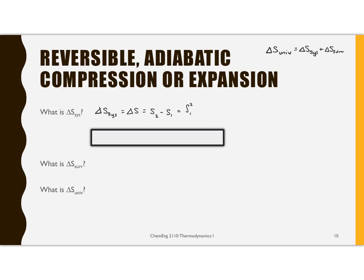We could also do this in an integral form, which would be the same thing. This is the most useful form because we have a definition for dS that says it is dQ for a reversible process divided by temperature. Now in our particular case, we're saying it's adiabatic — therefore this is identically zero. This means that adiabatic and reversible means isentropic. You can also show that if it is isentropic, if delta S equals zero, it must also be reversible and adiabatic.